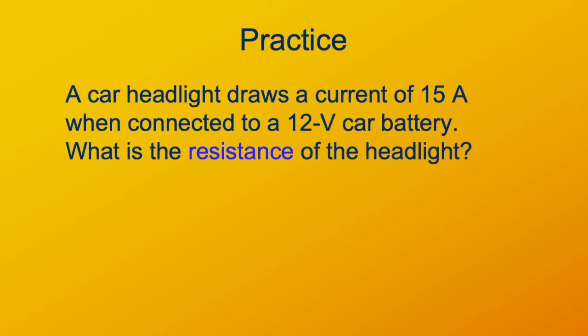So the voltage across the headlight is 12 volts. The current through it is 15 amperes. We're asking, what's the resistance of the headlight? Rearrangement of Ohm's Law tells us resistance equals voltage divided by current. In this case, voltage is 12 volts, and the current is 15 amperes.